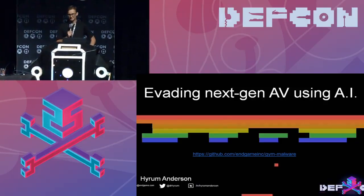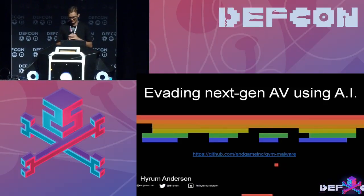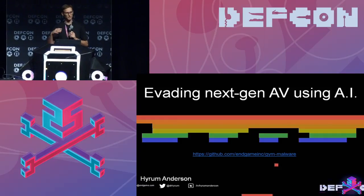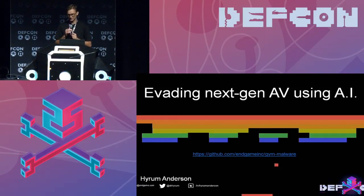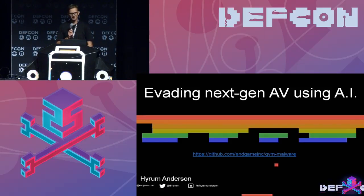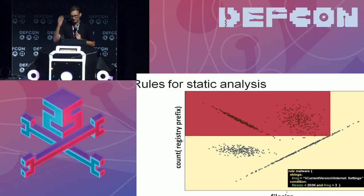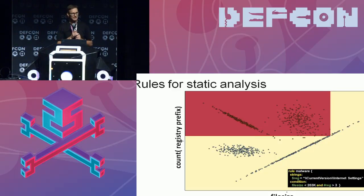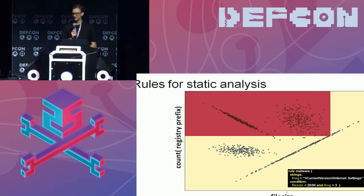I'm honored to be here at DEF CON and grateful to share some research. We're going to do three things. First, we're releasing a tool to attack next-gen AV and you can find it at that GitHub address. I'm going to describe it today, demonstrate it, and show you how to use it. Today we're talking about evading next-gen AV that uses static analysis for detecting Windows PE malware.